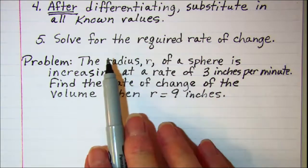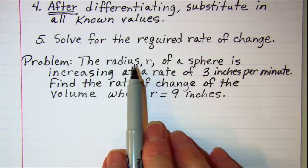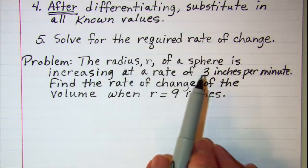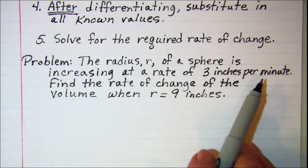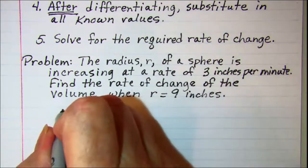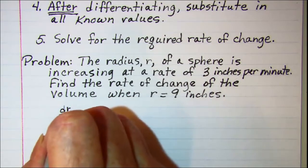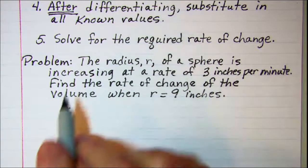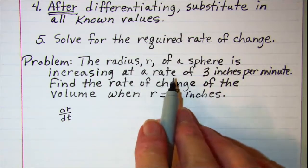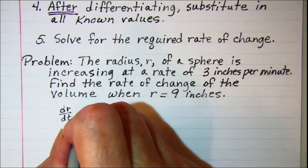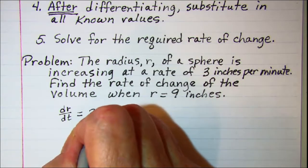So what we know: first of all, we know that our radius r is increasing at a rate of 3 inches per minute. We'll show that as the rate of change of our radius. So dr/dt, and that is increasing at a rate of 3 inches per minute. So that is a positive 3.